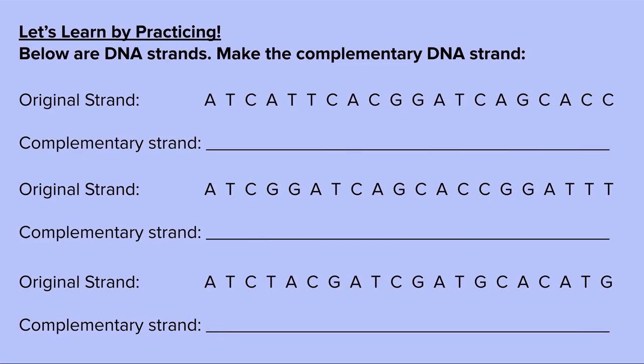In your notes you should see a practice page where you'll practice making complementary strands of DNA. This is based on the base pairing rules from Lesson 1: adenine pairs with thymine (A=T), and cytosine pairs with guanine (C=G). If you need a reminder of those rules, flip back to Lesson 1. Let's do the first example together — starting with an original strand, we write the complementary strand: A pairs with T, T pairs with A, C pairs with G, A pairs with T.